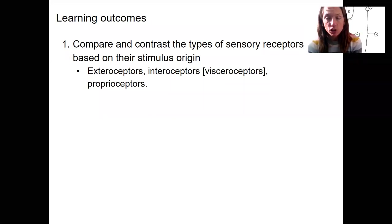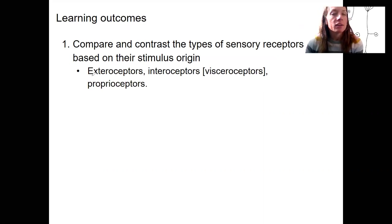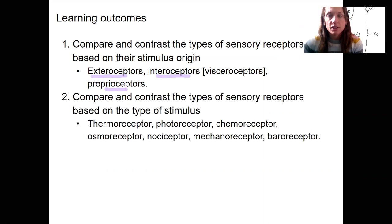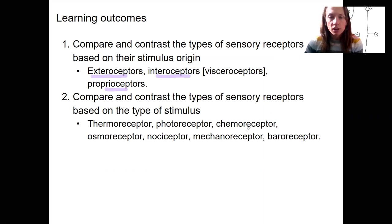You know all about sensory receptors in general terms — the types meaning outside stimulus or inside stimulus. Proprioceptors are one type of internal stimulus but more specific. You also know about the different types of stimuli that could stimulate a sensory receptor. We will focus more on some of these than others.